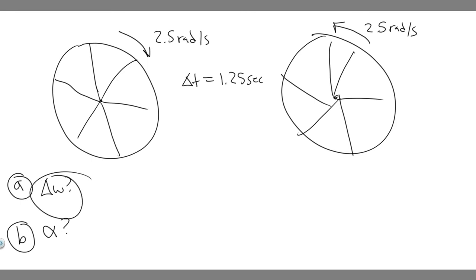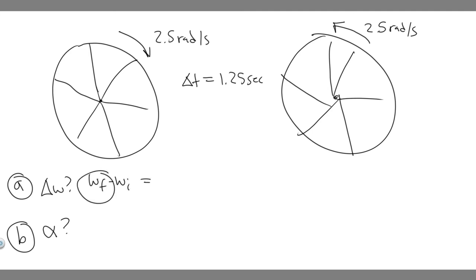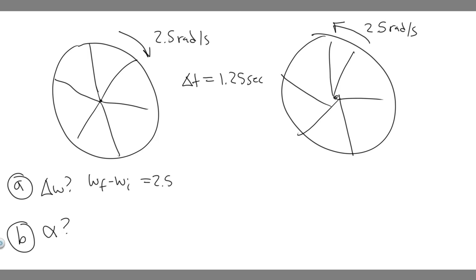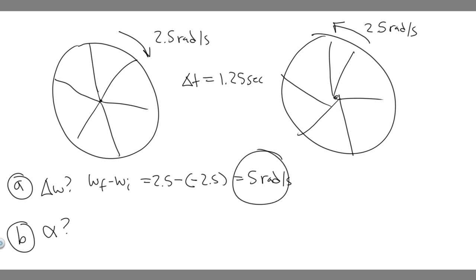Let's start with A. We're trying to find the change in angular velocity, omega. To find the change in something, you take the final minus the initial. The final is 2.5 radians per second counterclockwise, so it's positive 2.5. The initial is 2.5 radians per second clockwise, so it's negative 2.5. So: 2.5 minus (−2.5) equals 5 radians per second.